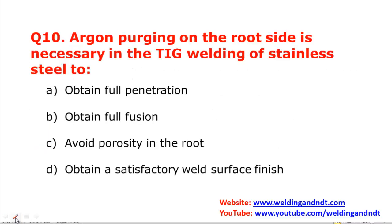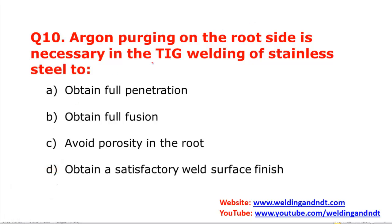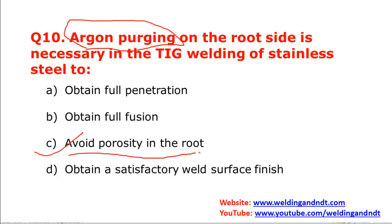Question number ten: argon purging on the root side is necessary in TIG welding of stainless steel. Why is argon purging done? In austenitic stainless steel, argon purging is done from the root side to avoid porosity in the root. When purging with argon from the root side, the root does not come into contact with atmospheric air, and hence oxidation will not happen and porosity will not occur.